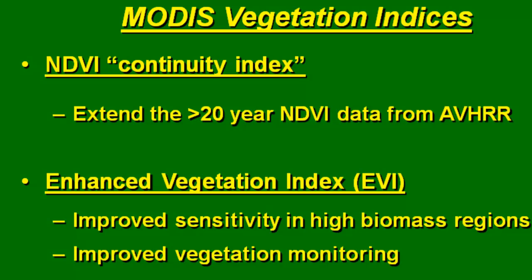There are two vegetation indexes. The standard NDVI allows us to extend from the AVHRR record into the MODIS record starting in 2000, and that's what we'll use in Alaska. There's also the Enhanced Vegetation Index (EVI), typically used in tropical areas with high biomass. NDVI will saturate and plateau as leaf area index gets very large, but that's not a problem in the boreal forest or tundra, so EVI is more appropriate for places like the Amazon. In Alaska, NDVI is the appropriate vegetation index to use.